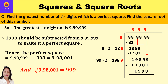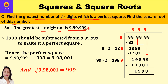Now let us take one more question: find the greatest six-digit number which is a perfect square, and find the square root of this number. The greatest six-digit number is 9,99,999. It may or may not be a perfect square. If we add 1 to it, it becomes a seven-digit number, 10 lakhs. So if we subtract a certain number from 9,99,999, we may get a perfect square number. We use the long division method to find that least number to subtract.